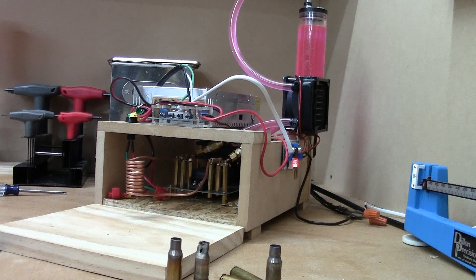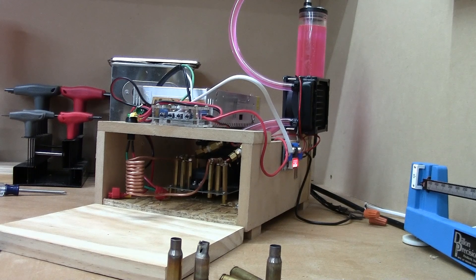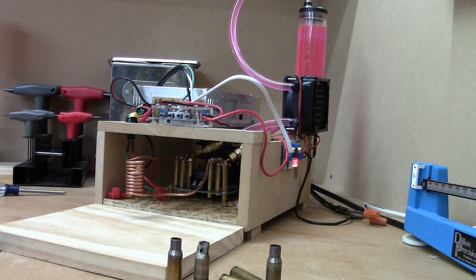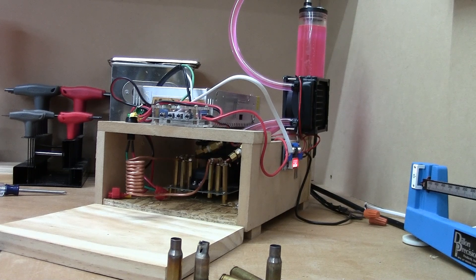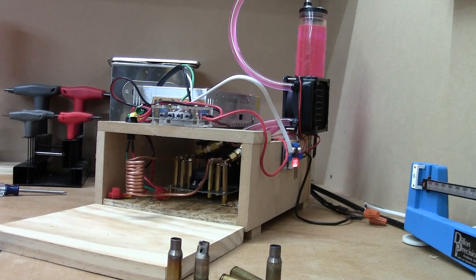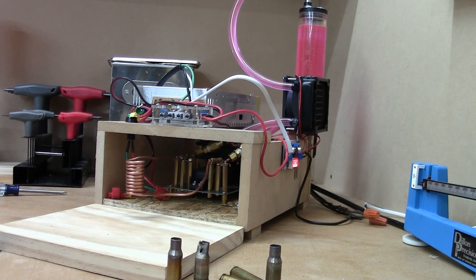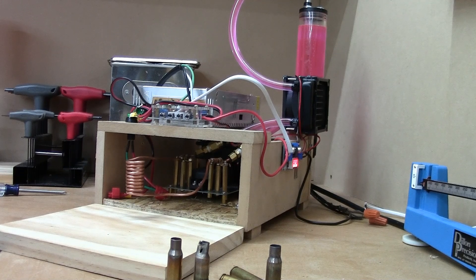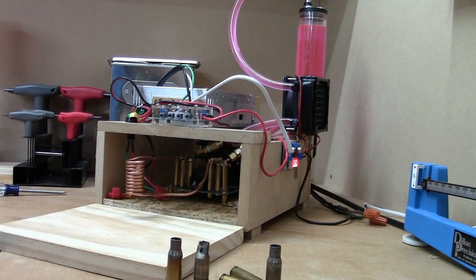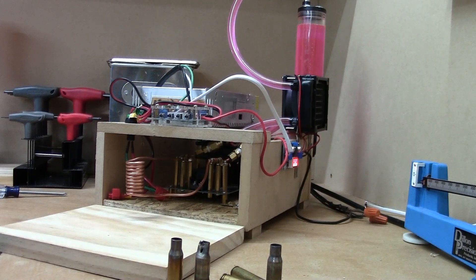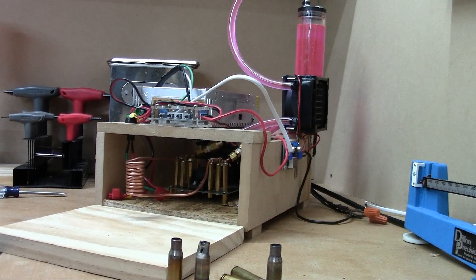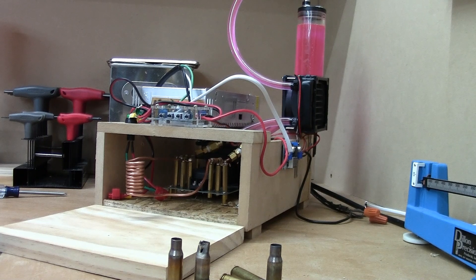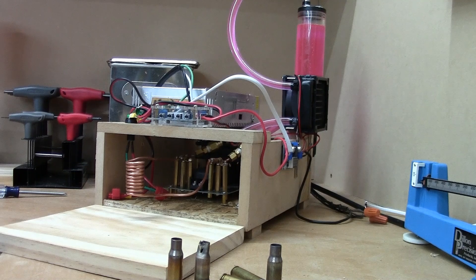But it works and that's kind of all that matters. But I'll post links to the build forum or the build thread on Sniper's Hide and then I'll post a link to that annealing page where the metallurgist talks about how annealing works in cartridge brass and stuff. And then I'll try to get all the links to the parts on Amazon. All right, thanks for watching.